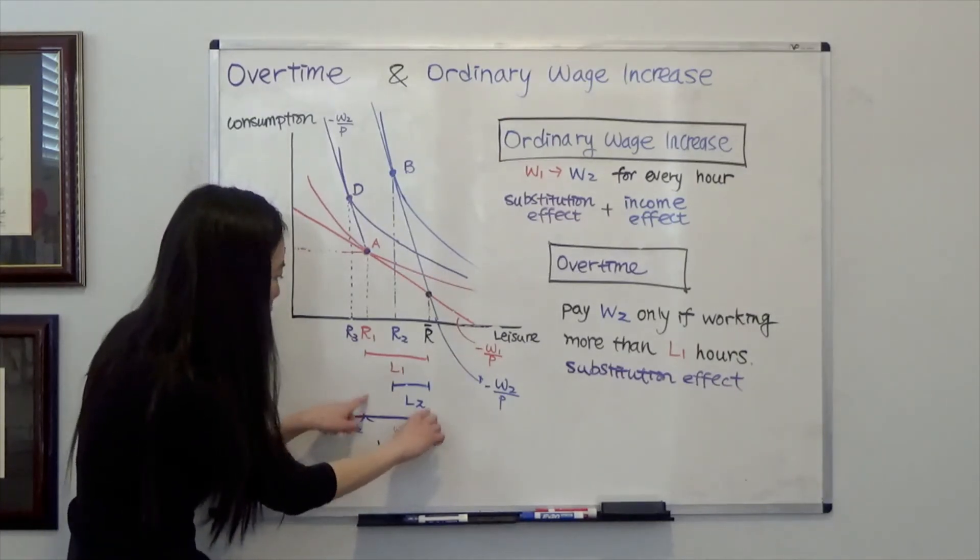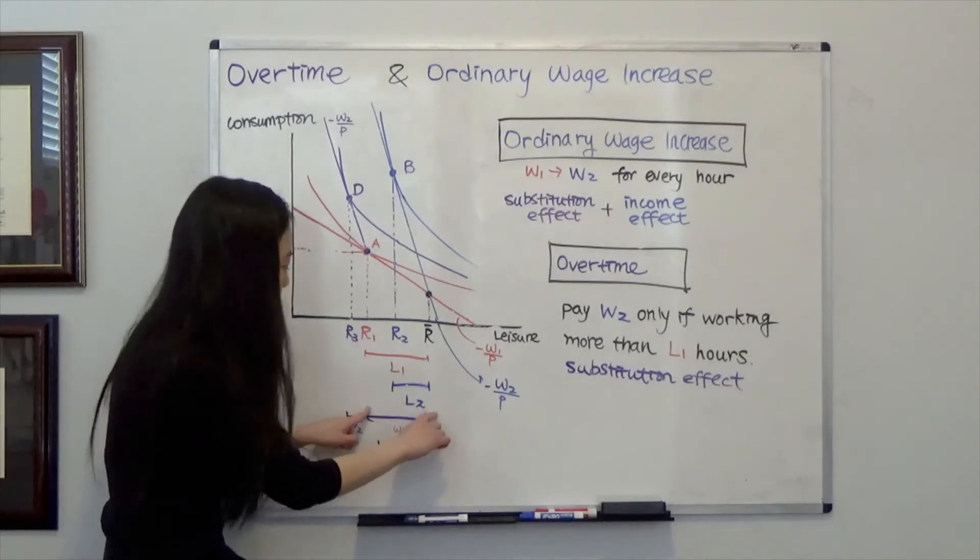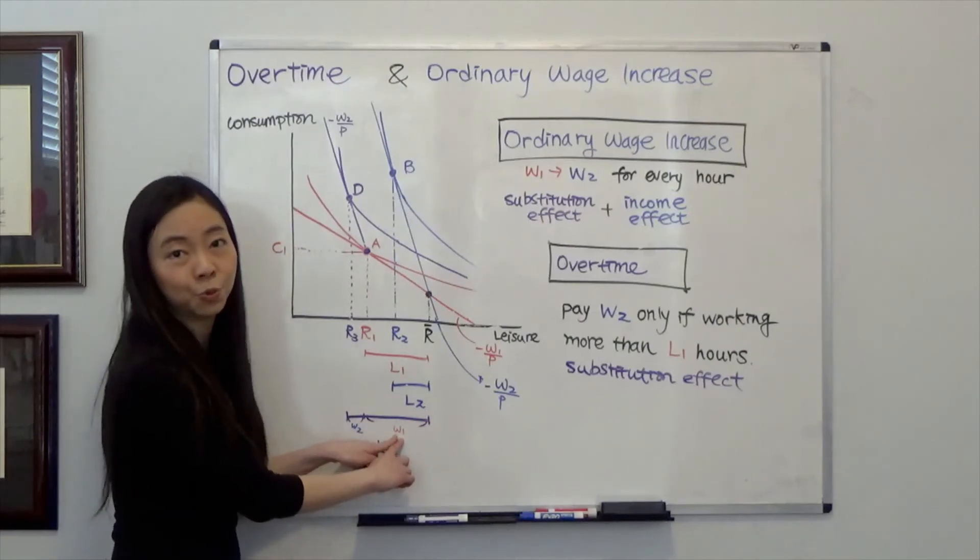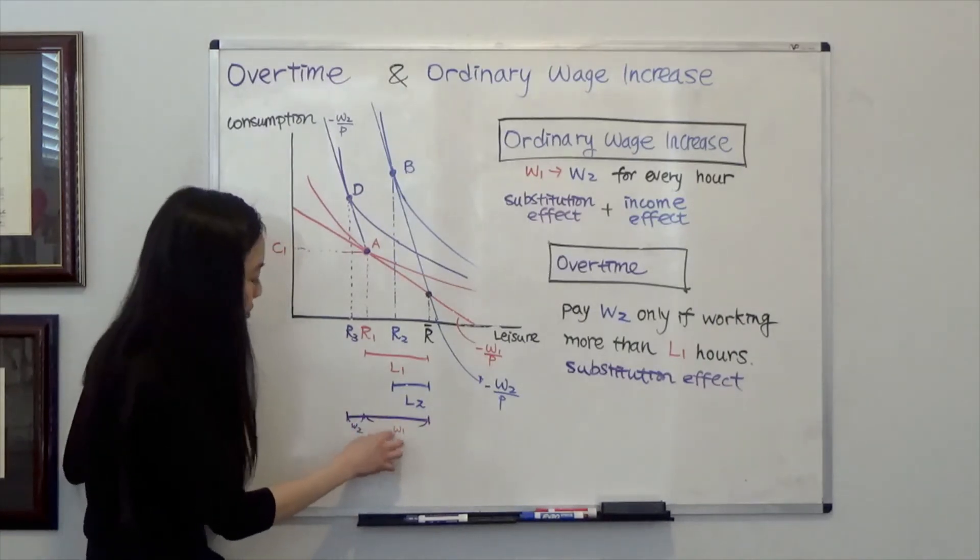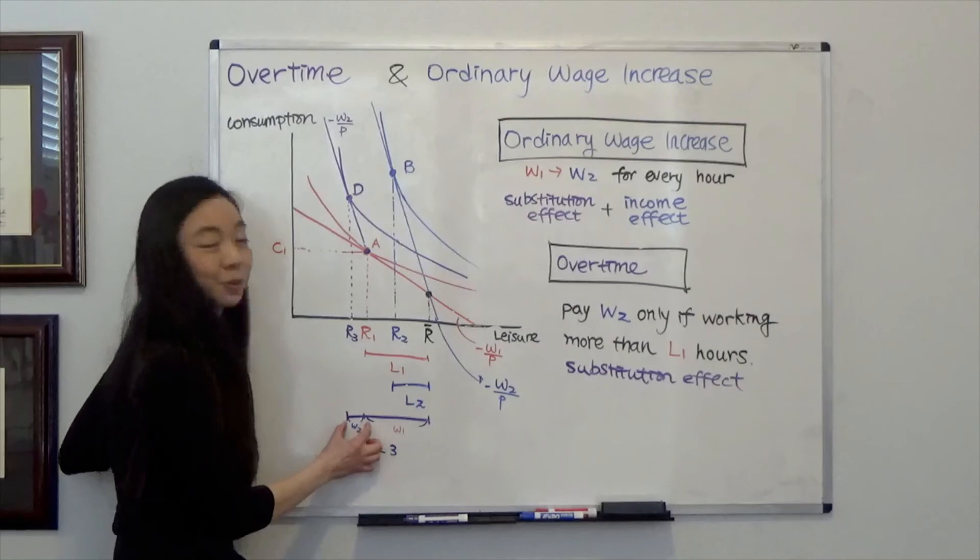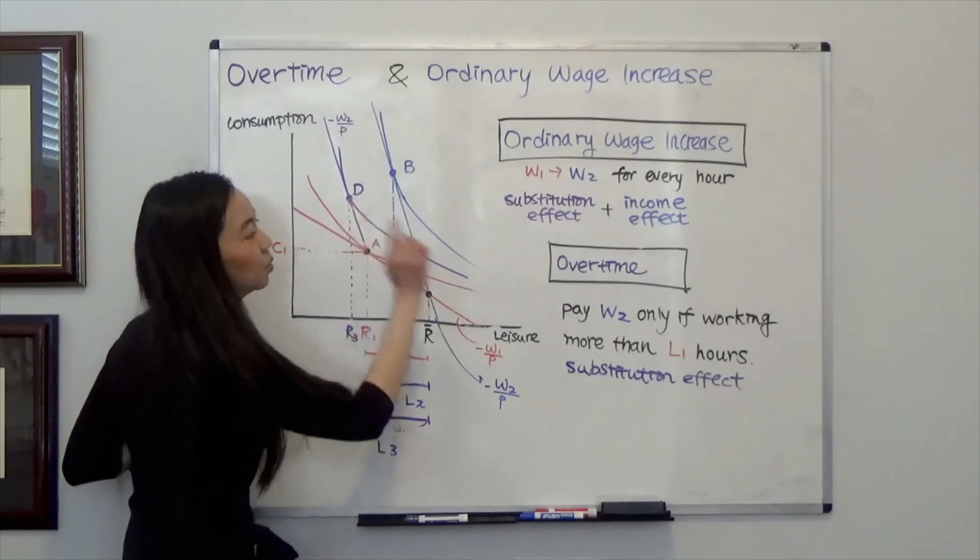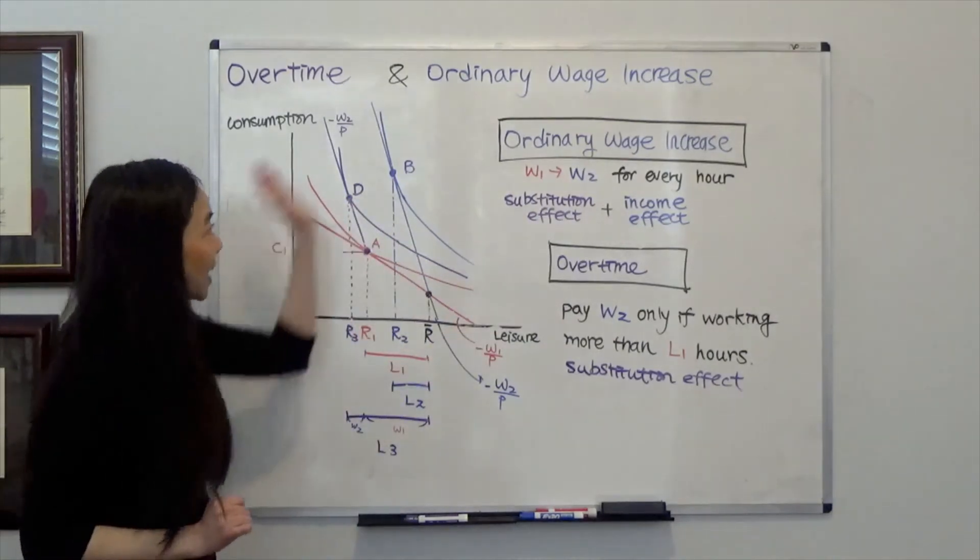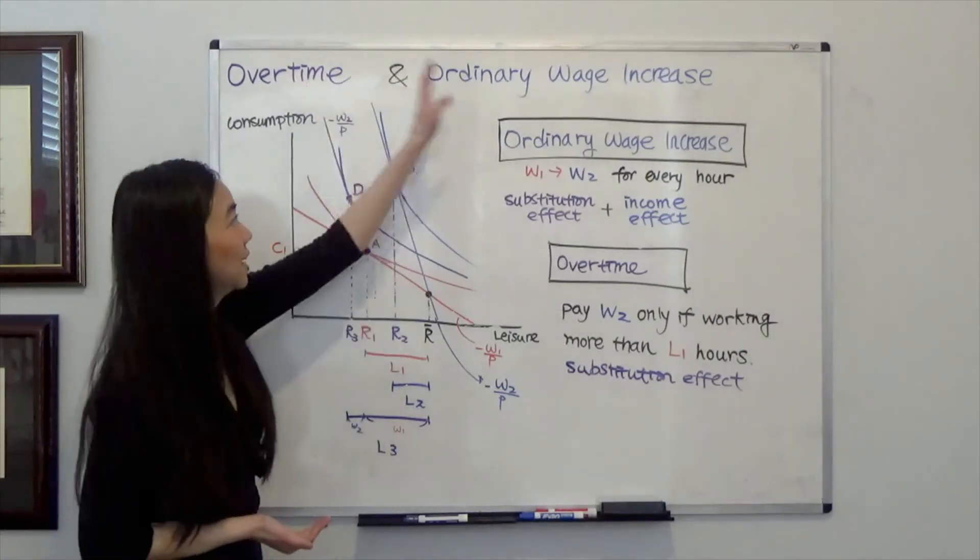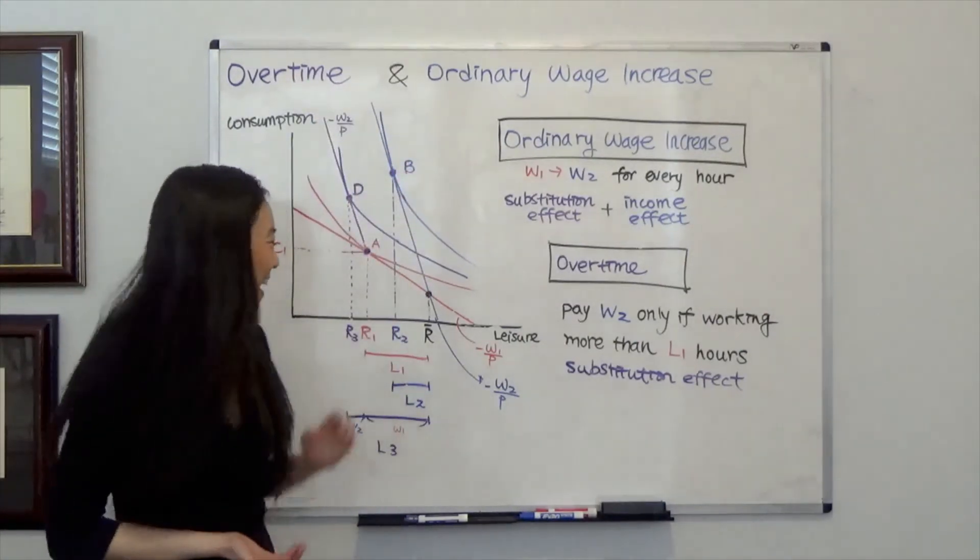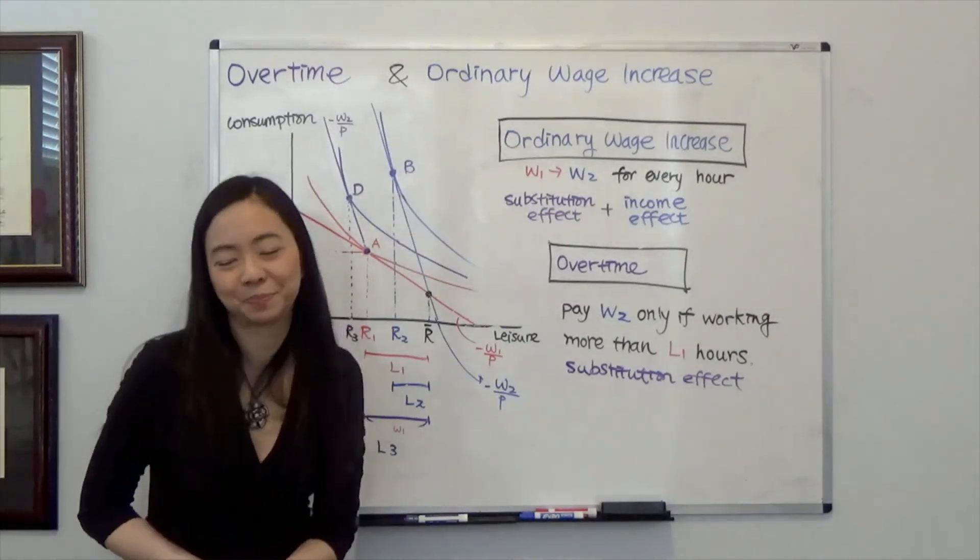And for the first L1 hours, in this L3 hours, I am paid wage rate W1. And for each additional hour, I get paid W2. So my new choice is point D with overtime. So that's the difference between overtime and ordinary wage increase. I hope this helps. And I'll see you next time.